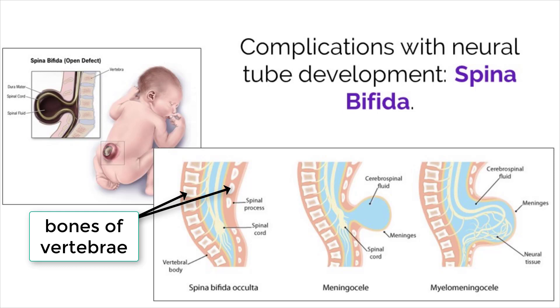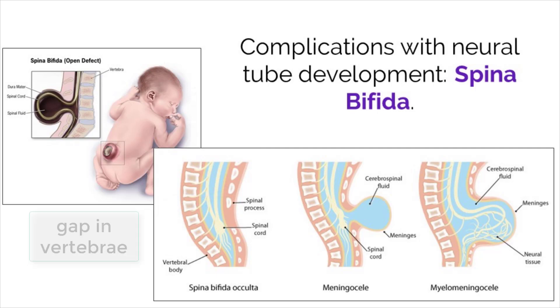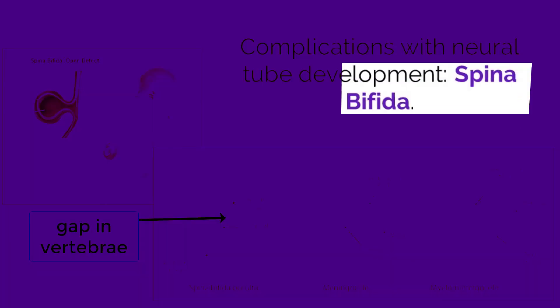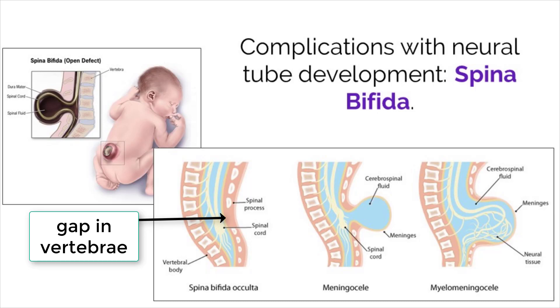If the bones of the vertebrae do not develop correctly and leave gaps, an individual can be born with a condition called spina bifida. This can lead to having either neural tissue or cerebrospinal fluid protrude out of the gap.